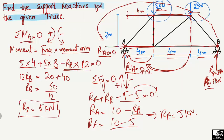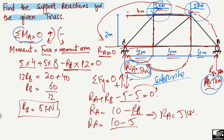We can verify the results: the total load on the truss is 5 + 5 = 10 kN, and the total reactions are also 5 + 5 = 10 kN, confirming our answers are correct. If you understand how to find support reactions for any truss using moment and equilibrium equations, please subscribe to our channel for daily civil engineering videos. Thank you for watching.